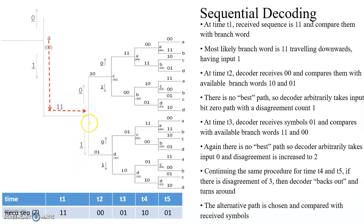At time period T2, the received sequence is 0,0. There are two paths having output 1,0 and 0,1. None of the branches have output 0,0. So by default, we choose the upper path. Comparing 1,0 with received 0,0, the first bit is different, so the disagreement count is 1, which is written here.